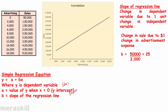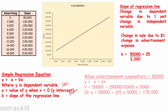So y = a + bx. Y is the dependent variable — sales. X is the independent variable — advertising costs. B is the slope of the line, called beta; in this case it is 25. And a is the y-intercept — the value of y when x equals 0. When x is 0, y is $50,000.